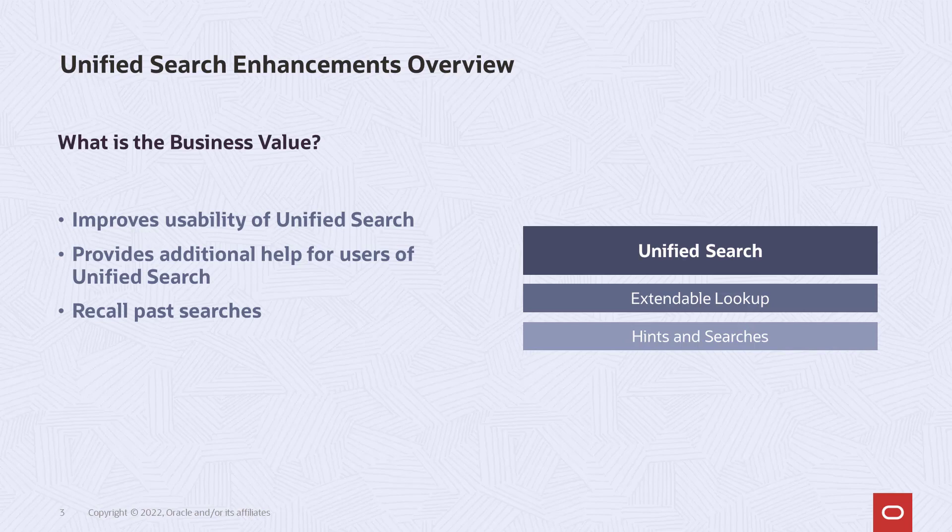In this release, the unified search has been enhanced in the following ways: it provides additional information to the user on the configured search using advanced search and hints; it provides a list of configured searches that the user has access to; and finally, you can recall past searches to improve reuse.